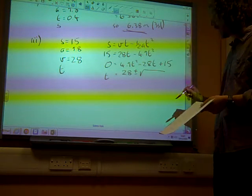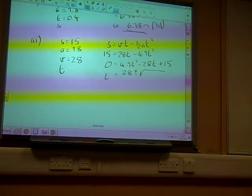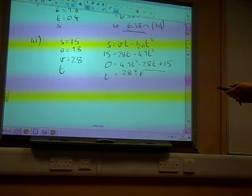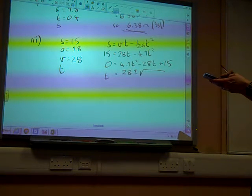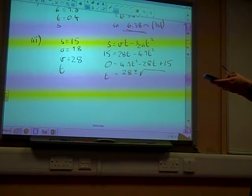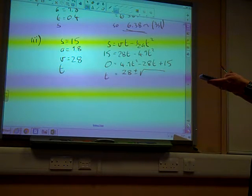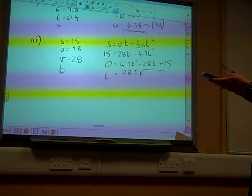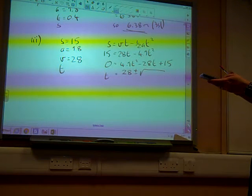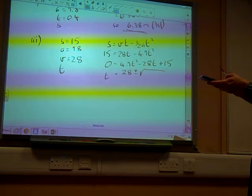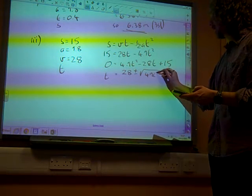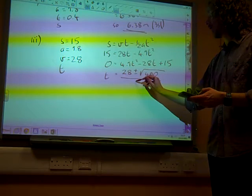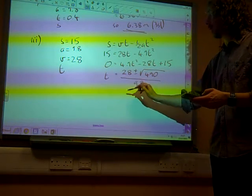That doesn't look like the right answer on the paper. What do we get when we do it? Plus or minus... It is right, I know what I've done. B squared, 28 minus 4 times 4.9 times 15 gives us 490 inside there. All over 2A. So all over 9.8.